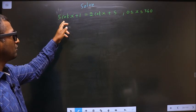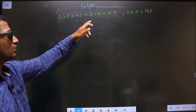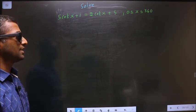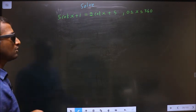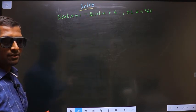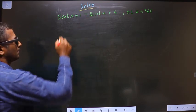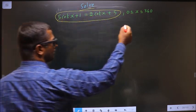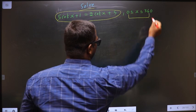Solve 5 cot x plus 1 equal to 2 cot x plus 5, where x lies between 0 to 360 degrees. They told you to solve, so you should find the values for x satisfying this equation and also it should lie in this interval.